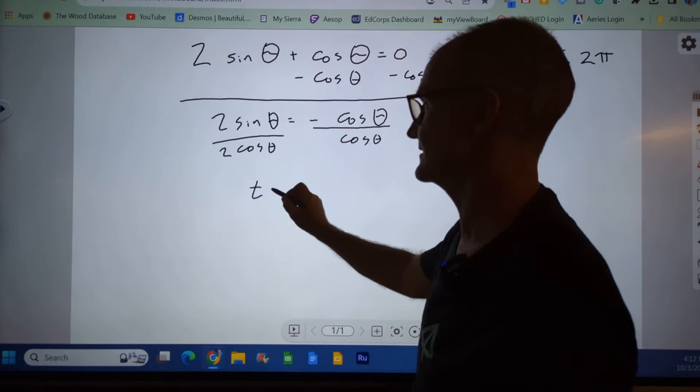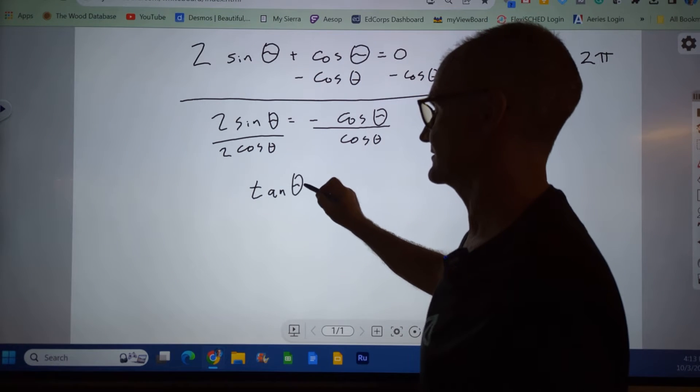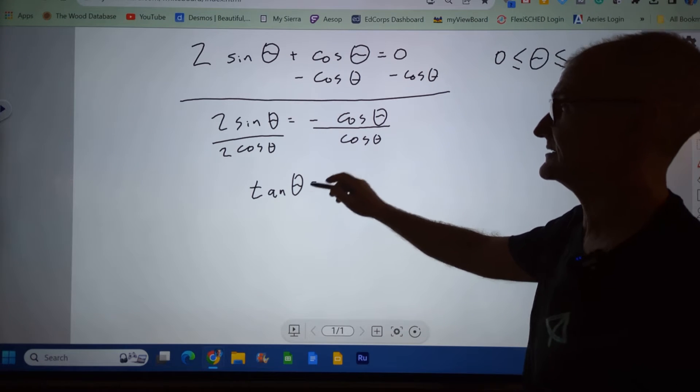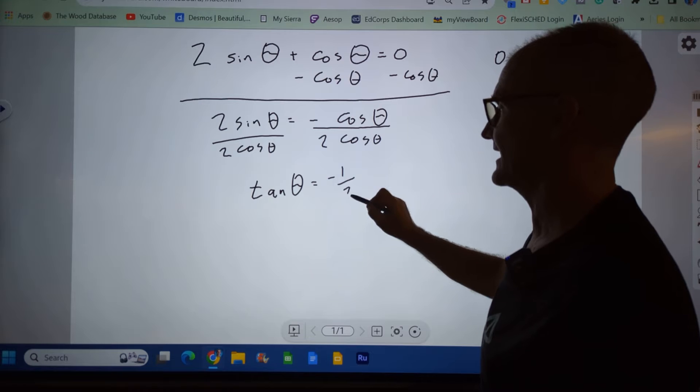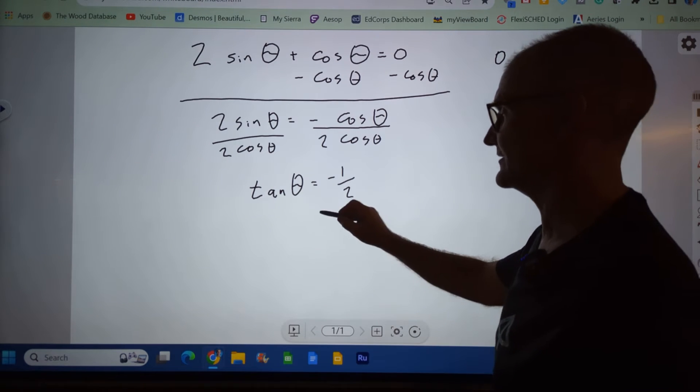That's tangent of theta, right? So that's a quotient identity. Sine over cosine is tangent. And then I divide both sides by 2 to get negative 1 half. So I have tangent of theta equals negative 1 half.